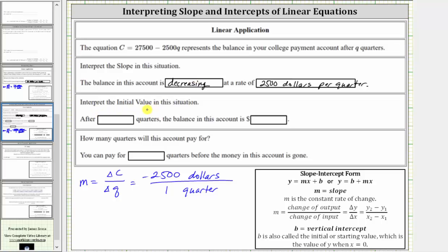Next, we're asked to interpret the initial value in this situation. Going back to the notes, B graphically is the vertical intercept, but it's also often called the initial value or starting value, which is the Y value when X is zero.